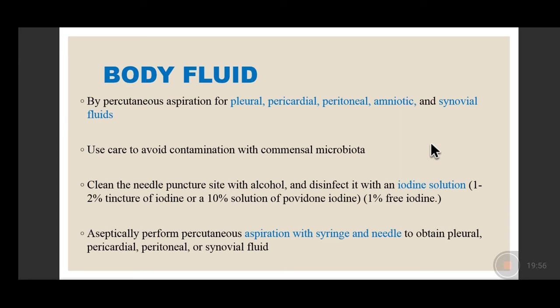Various body fluids received in the lab include pleural, pericardial, peritoneal, amniotic, and synovial fluids. These are collected by percutaneous aspiration. Maximum care is needed to avoid contamination since these samples are precious — you cannot routinely request pericardial, pleural, or amniotic fluid as these procedures are painful. Clean the puncture site with alcohol and disinfect with iodine solution — tincture of iodine or povidone iodine — then aspirate with a sterile syringe and needle under aseptic precautions.